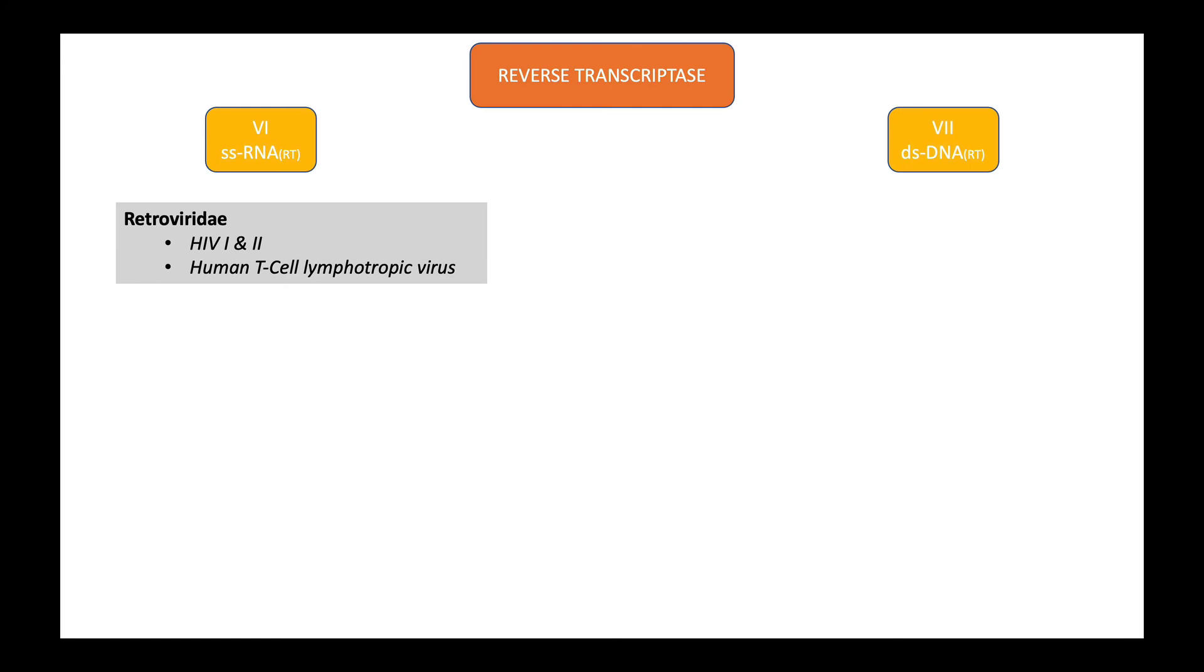The last class, class seven, is the double-stranded reverse transcriptase virus. The family under this is Hepadnaviridae. The virus that is pathogenic to humans in this family is hepatitis B virus, which is capable of causing chronic hepatitis and hepatocellular carcinoma.